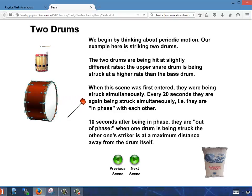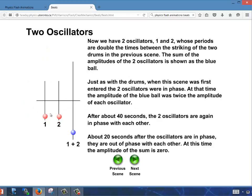Our example here is striking two drums. So the two drums are being hit at slightly different rates. This upper drum is being struck at a higher rate than the bass drum. So when we started this, they were being struck simultaneously. And every 20 seconds later, they are again struck simultaneously, so they're in phase with each other. And then 10 seconds after, they're out of phase right now. And 10 seconds later, they'll be back in phase.